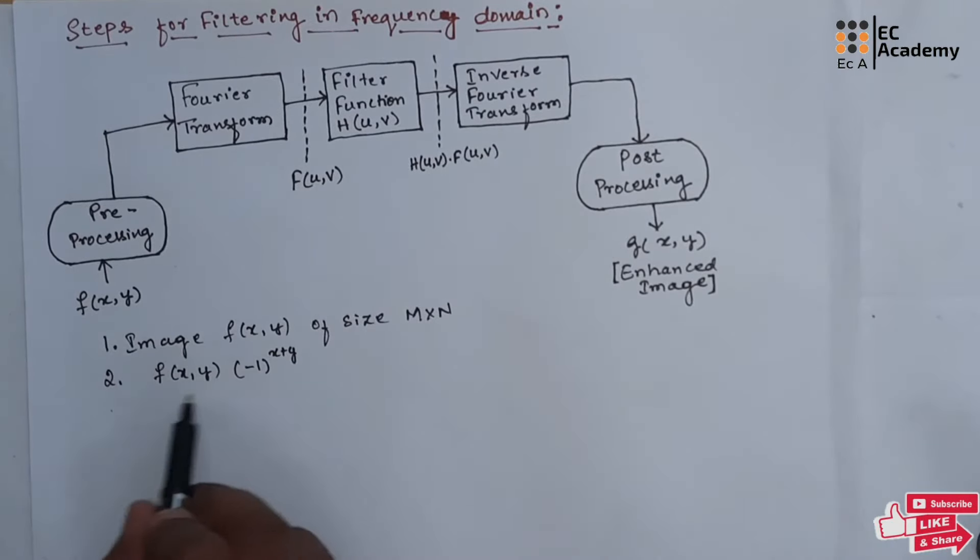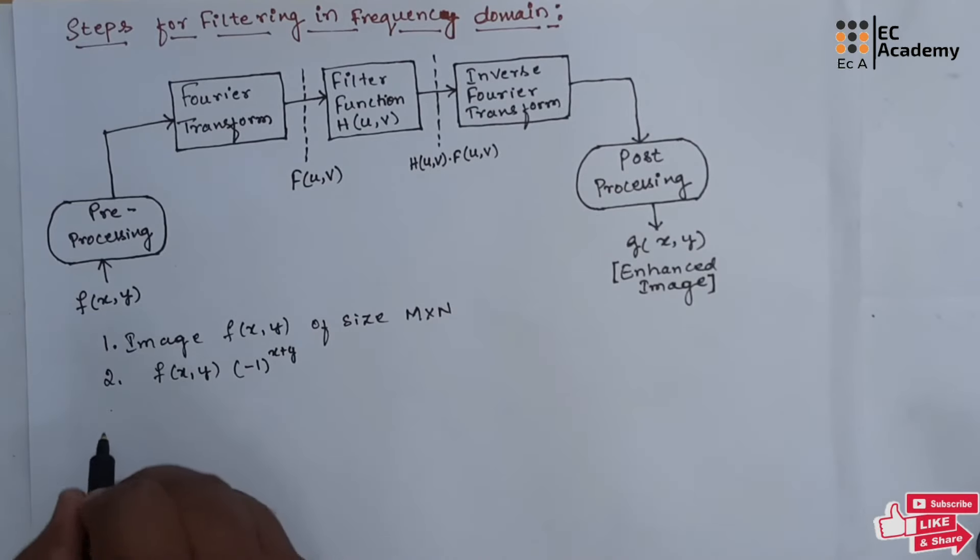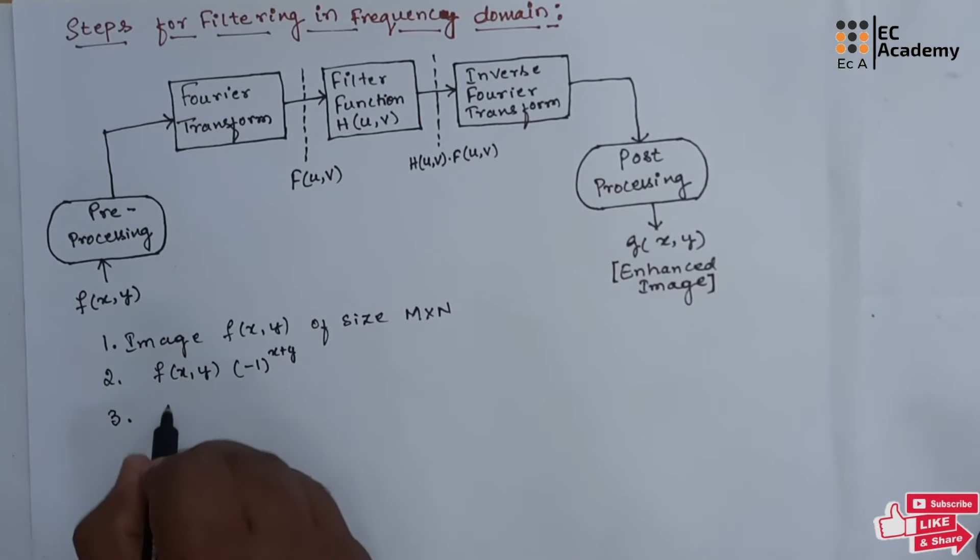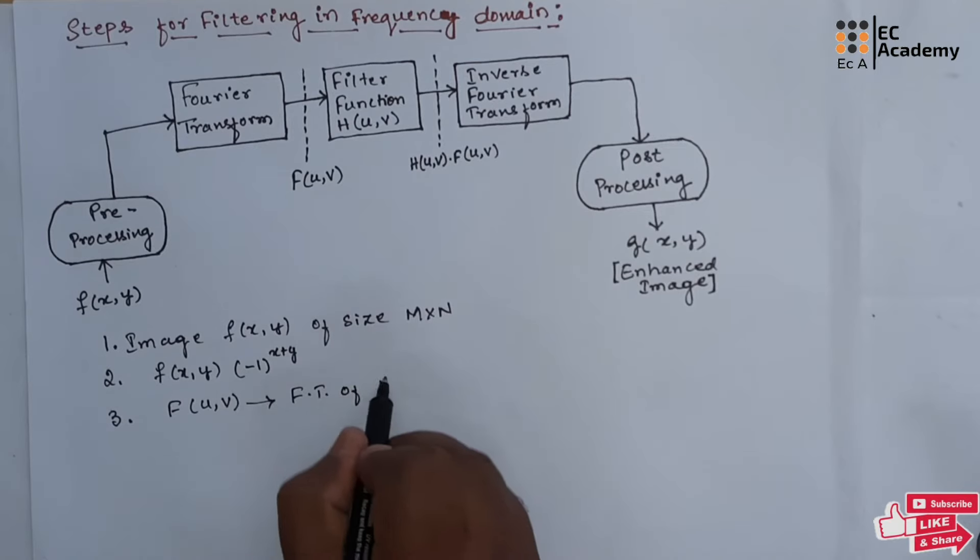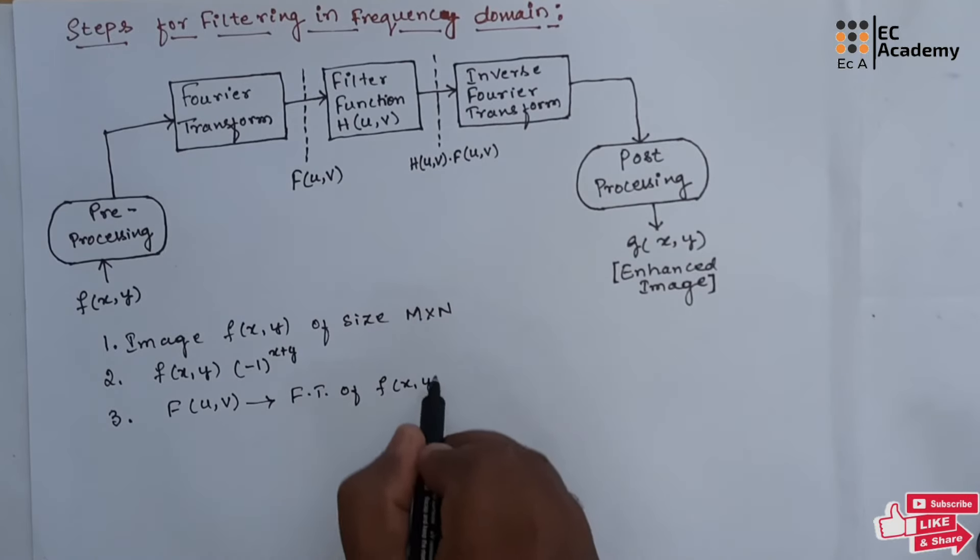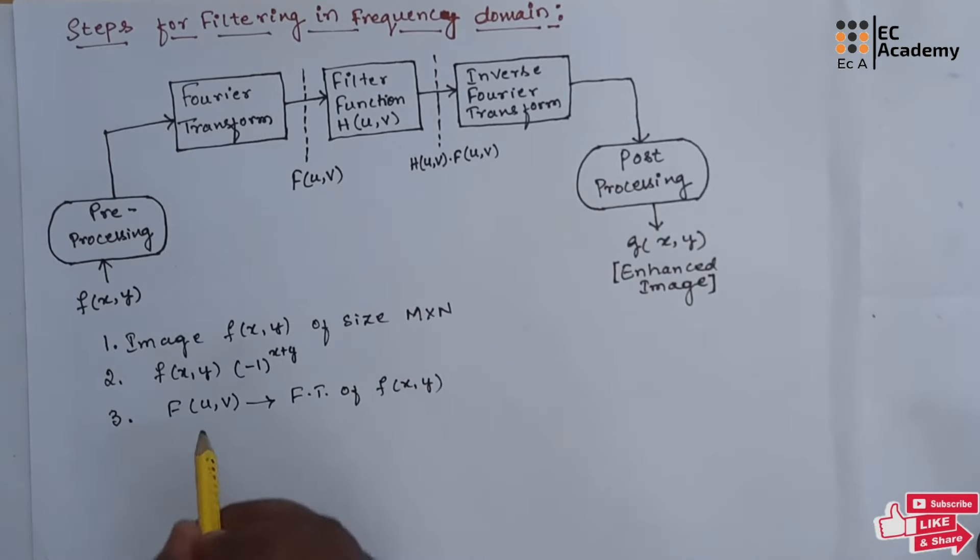Then Fourier transform is applied on this image to get f of u, v. Here f of u, v is the Fourier transform of f of x, y. This can be obtained by applying DFT.